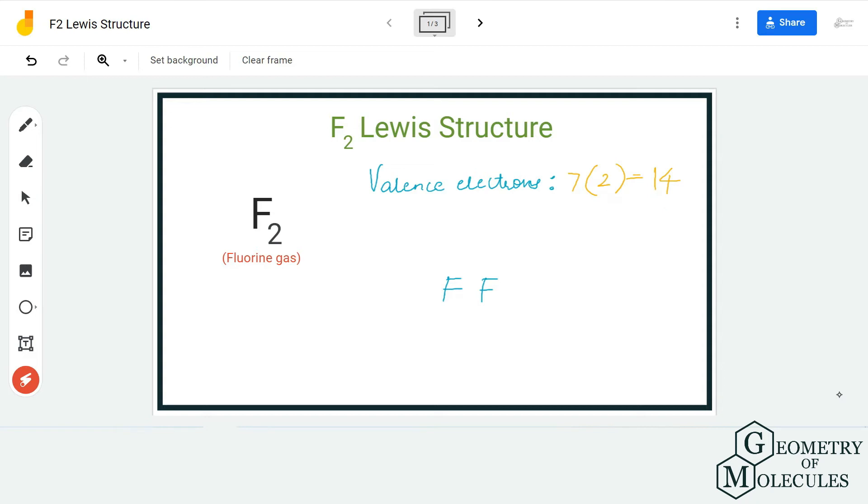Once you have that, place both these atoms next to each other. To show a bond between these two fluorine atoms, place a pair of electrons like this.